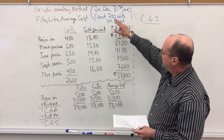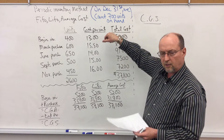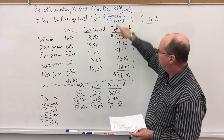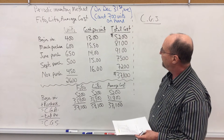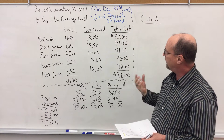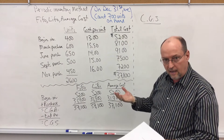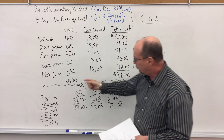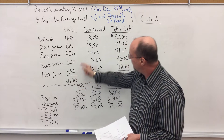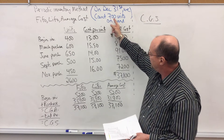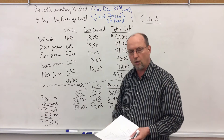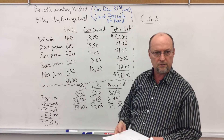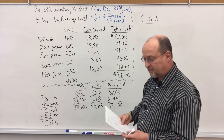On December 31st, we did a physical inventory count and we noticed we had 700 units on hand. If we had 700 units in ending inventory, obviously they weren't sold. So 2,600 units available minus the 700 units — we must have sold 1,900 units. Using FIFO, let's calculate that value.